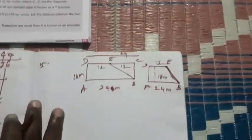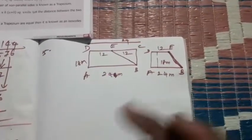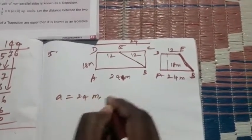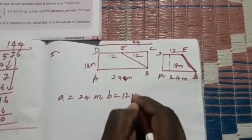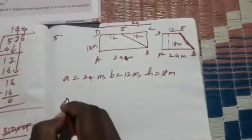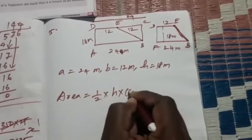So we get a trapezium. Cultivation area is what is that? Trapezium shape. Therefore take it: A is 24 meters, B is 12 meters, H is 18 meters. Therefore area equal to half into H into A plus B.